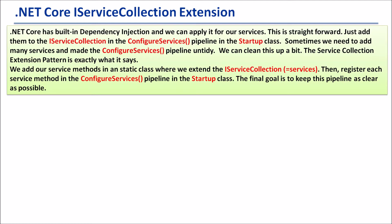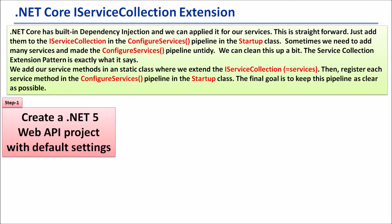This tutorial process has been divided into six steps. I will show each step and its tasks. Step 1: Create a .NET 5 Web API project with default settings.